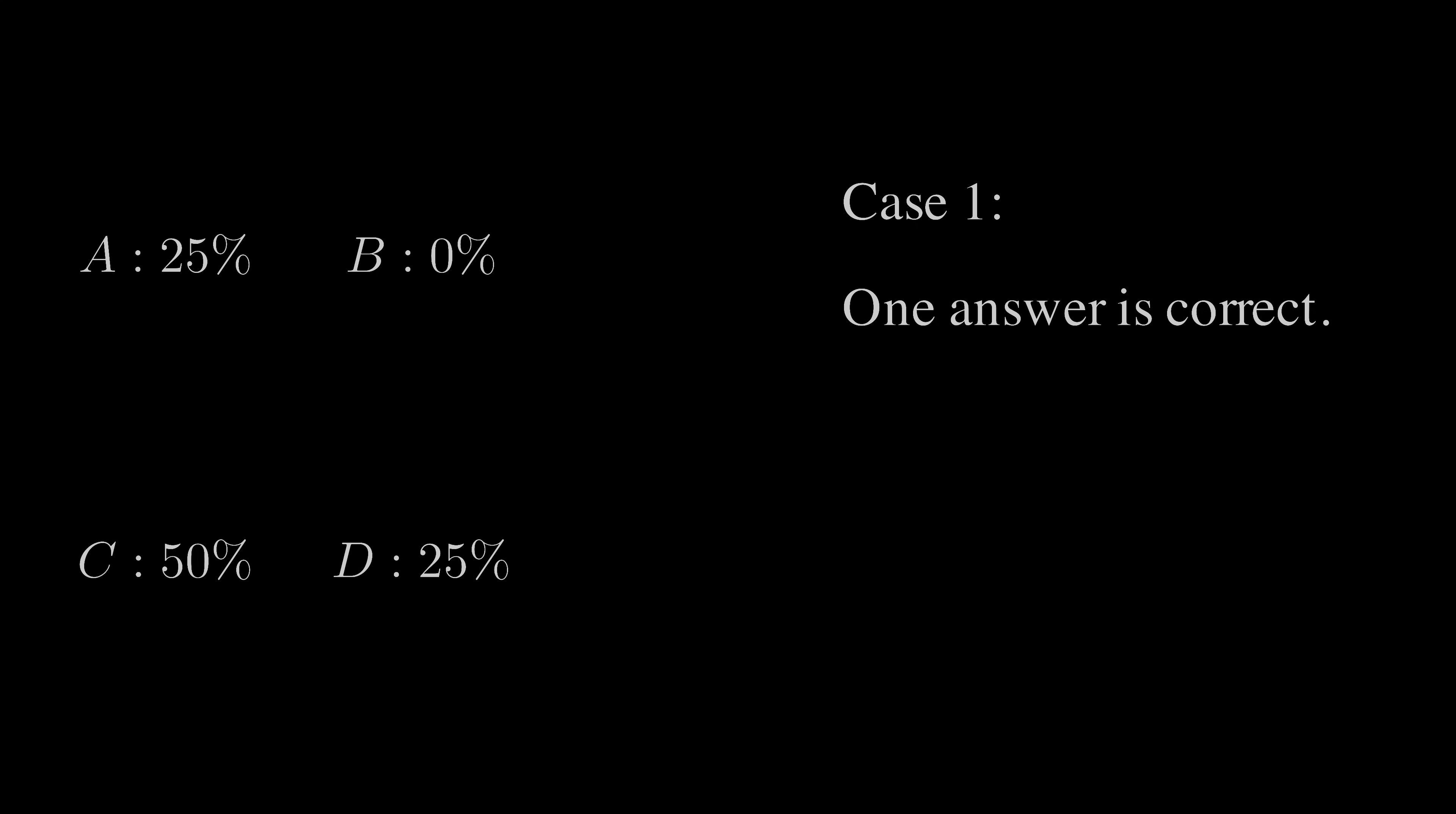Can B be correct? Well, if B is correct, then there is no correct answer. But B is correct. It's a self-contradiction.